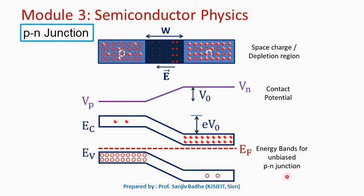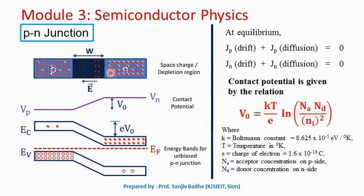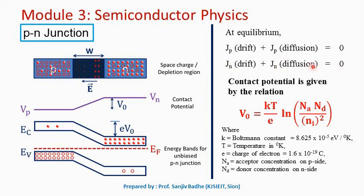For the unbiased P-N junction, the energy band diagram shows a constant Fermi level, with the conduction band close to the Fermi level on the N side and the valence band close to the Fermi level on the P side. At equilibrium, diffusion current caused by electrons diffusing from N to P and holes diffusing from P to N is balanced by drift current from the internal electric field. Therefore: drift current density due to holes + diffusion current density due to holes = 0, and similarly for electrons — so no net current flows in the unbiased condition.